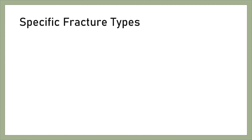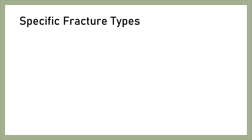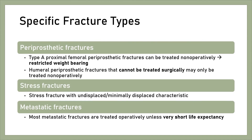Specific fracture types: First, periprosthetic fractures — Type A proximal femoral periprosthetic fractures can be treated non-operatively with restricted weight bearing, and humeral periprosthetic fractures that cannot be treated surgically may only be treated non-operatively. Second, stress fractures — those that are undisplaced or minimally displaced. Third, metastatic fractures — most metastatic fractures are treated operatively unless the patient has a very short life expectancy.